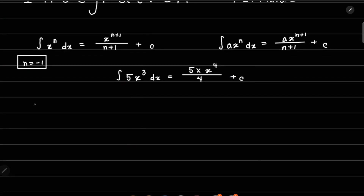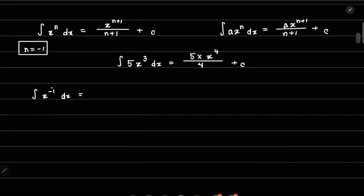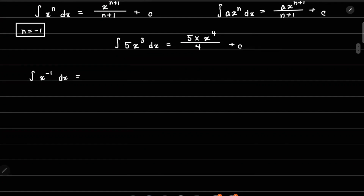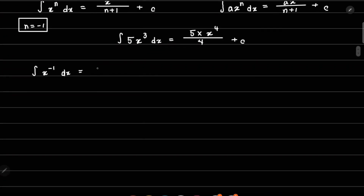What if the value of n is minus 1, i.e. we have x to the power minus 1 dx? The exception arises because if n is minus 1, the denominator becomes 0, and anything divided by 0 has no answer. So we need a special case: when n is minus 1, integrating gives the natural logarithm of x plus C.